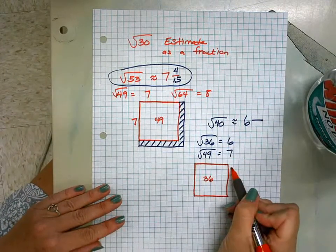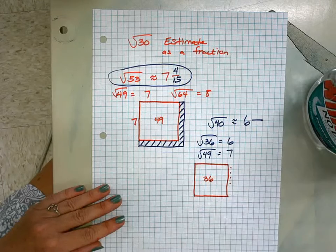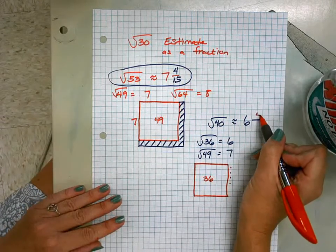To get to 40, I would need 1, 2, 3, 4 extras. There's my numerator.